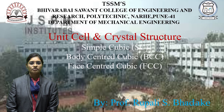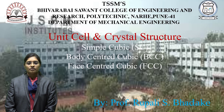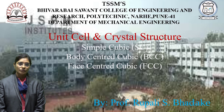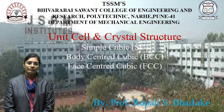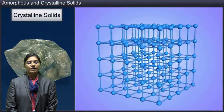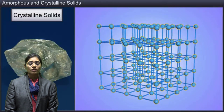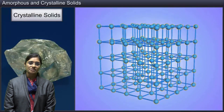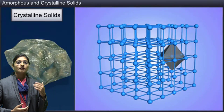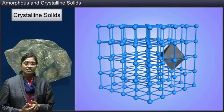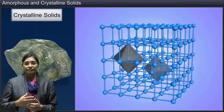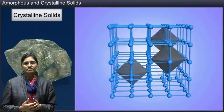In this lecture we can see what is unit cell, what is crystal structure and what are the types of crystal structure. We will see one by one to understand. First of all, we have to understand the concept related to crystalline solid. Crystalline solid means the constituent particles like ions, molecules, atoms are arranged three-dimensionally in a definite order — that is a crystalline solid.